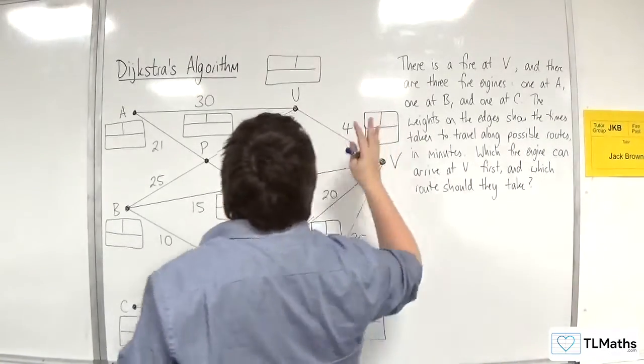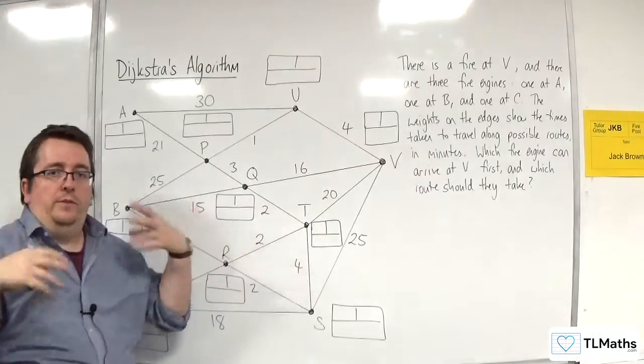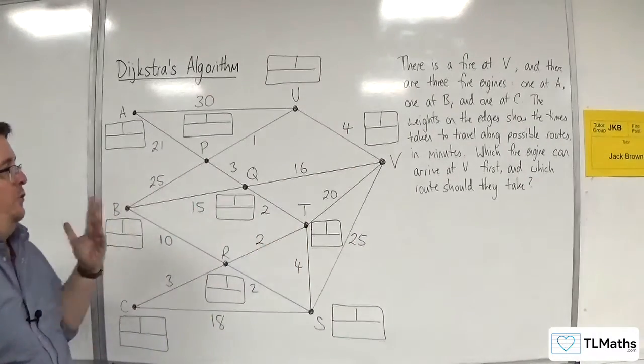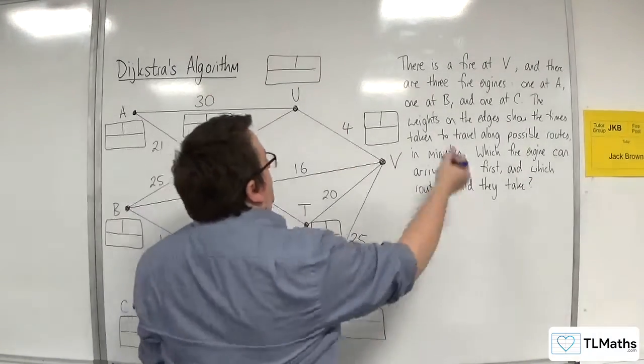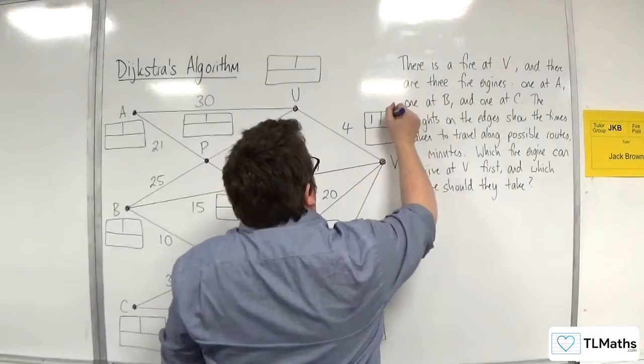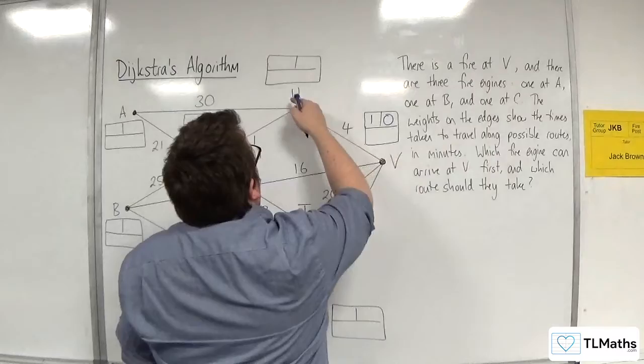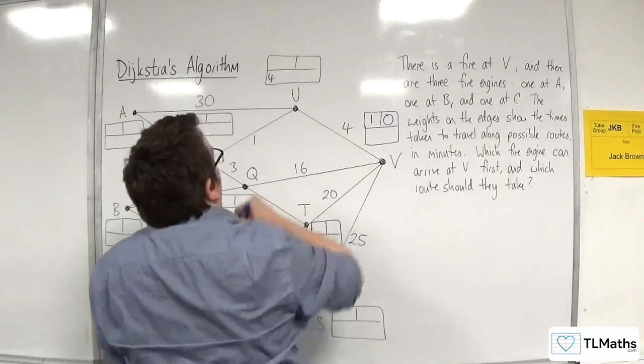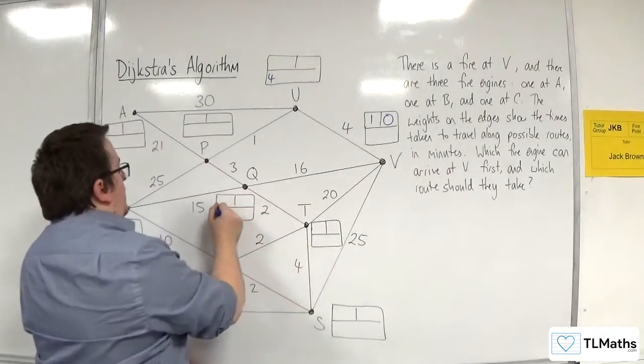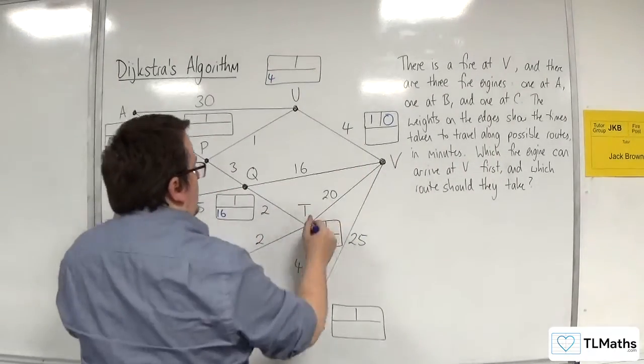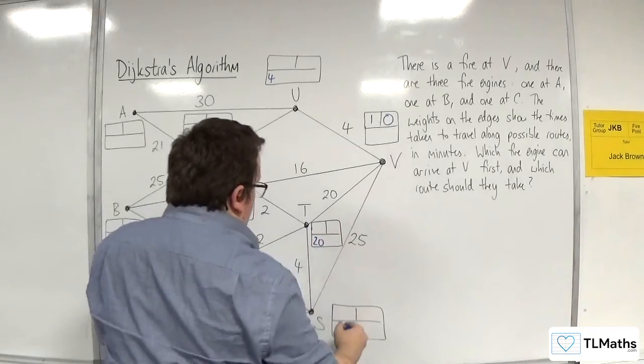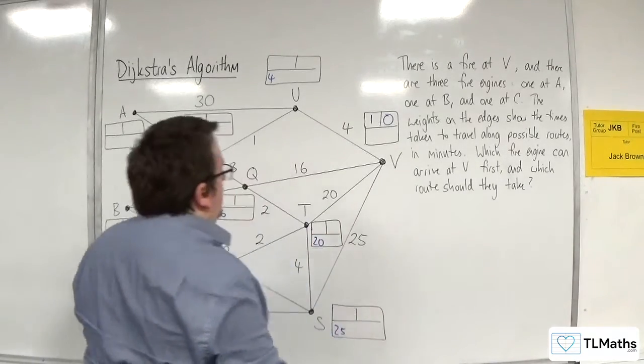So we're going to do it backwards. So we're going to start from V. In essence, that's where we're going to start. So it gets labelled 1, and final value 0. So 4 to get to U, so 4 goes into the working value, 16 for Q, 20 for T, and 25 for S.